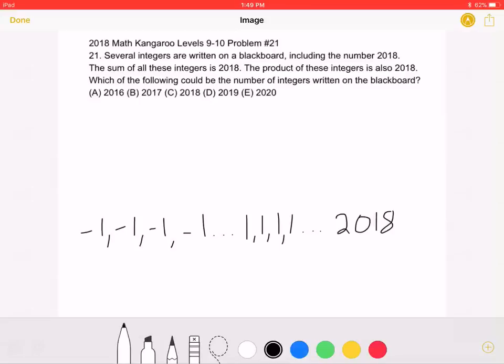This is the 2018 Math Kangaroo Levels 9-10 Problem Number 21. Several integers are written on a blackboard, including the number 2018. The sum of all of these integers is 2018. The product of these integers is also 2018.